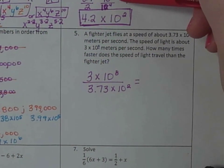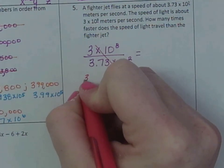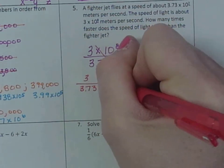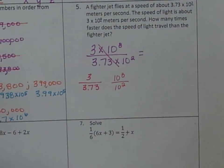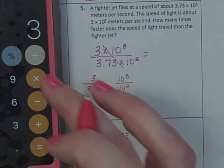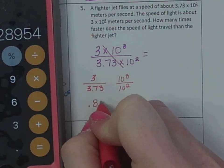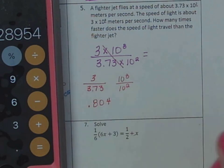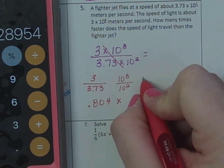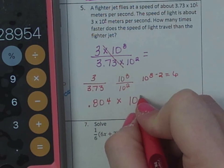Do it just like we did number 3, since it's now dividing using scientific notation. Break it into two parts. 3 over 3.73, and 10 to the 8th over 10 squared. Divide 3 by 3.73, which is 0.804 times, now we have 10 to the 8th over 10 squared. So I do 10 to the 8th minus 2. 8 minus 2 equals 6. It would be 10 to the 6th.